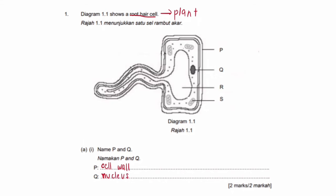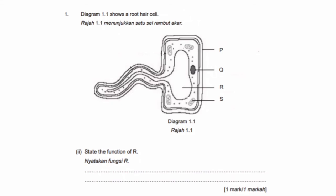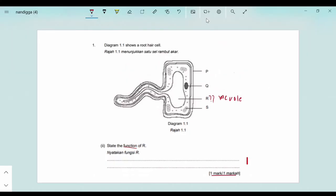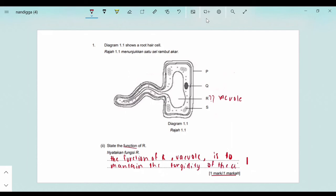For those who got the answer right, good job! Next question: state the function of R. We first need to identify what R is — R is the vacuole. The ideal answer for this question is: the function of R, which is the vacuole, is to maintain the turgidity of the cell. Since the mark allocated is only one, make sure you give only one function of the vacuole.